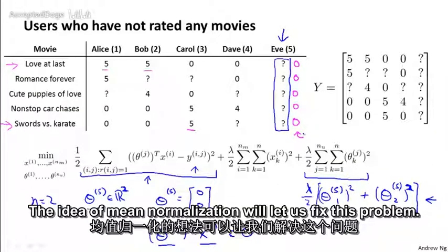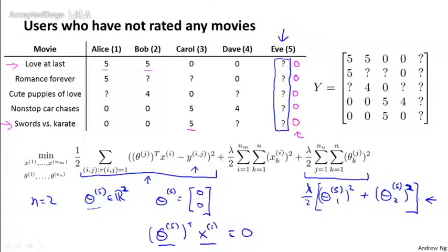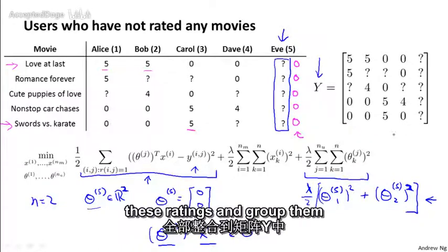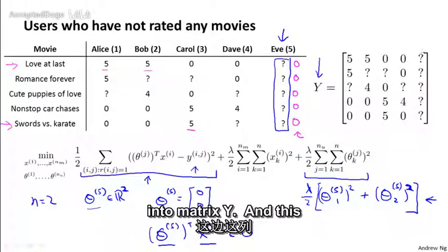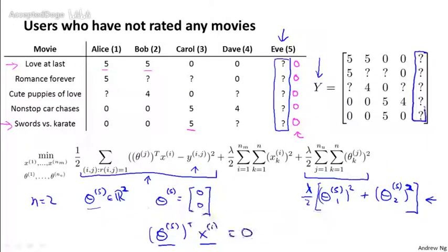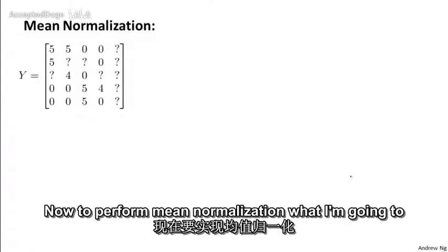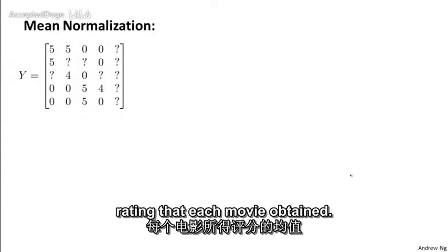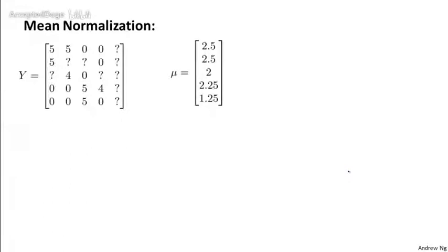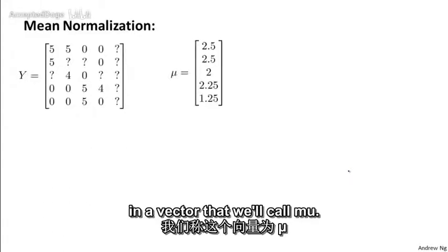The idea of mean normalization will let us fix this problem. So here's how it works. As before, let me group all of my movie ratings into this matrix Y. And this column over here of all question marks corresponds to Eve's not having rated any movies. Now, to perform mean normalization, what I'm going to do is compute the average rating that each movie obtained.